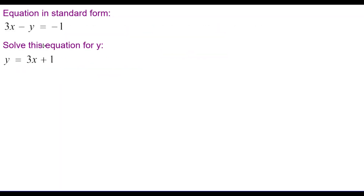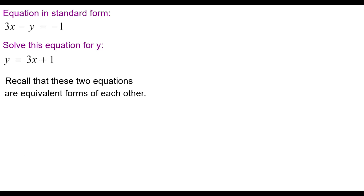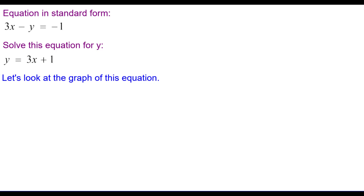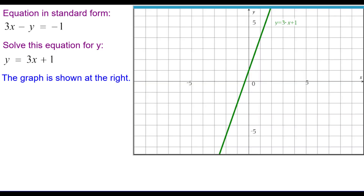We have the equation in standard form and the equation solved for y. Recall that these two equations are equivalent forms of each other — they look different, but they describe the same set of points. Here is the graph of y equals 3x plus 1, or equivalently 3x minus y equals negative 1.